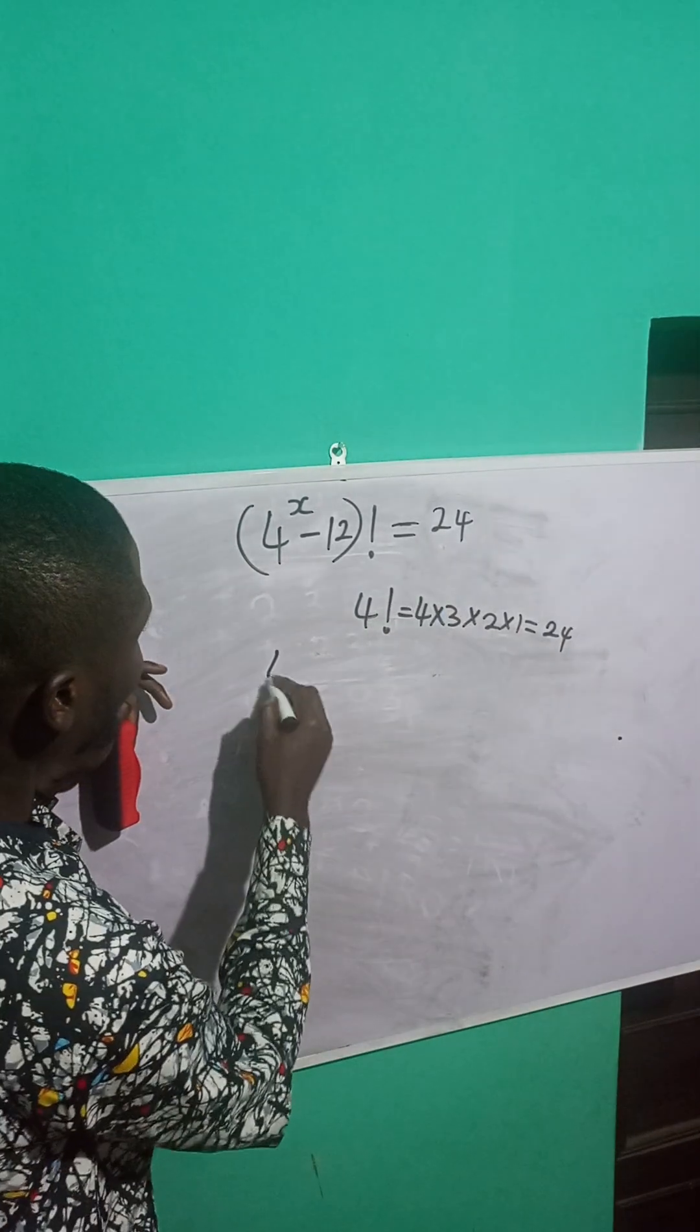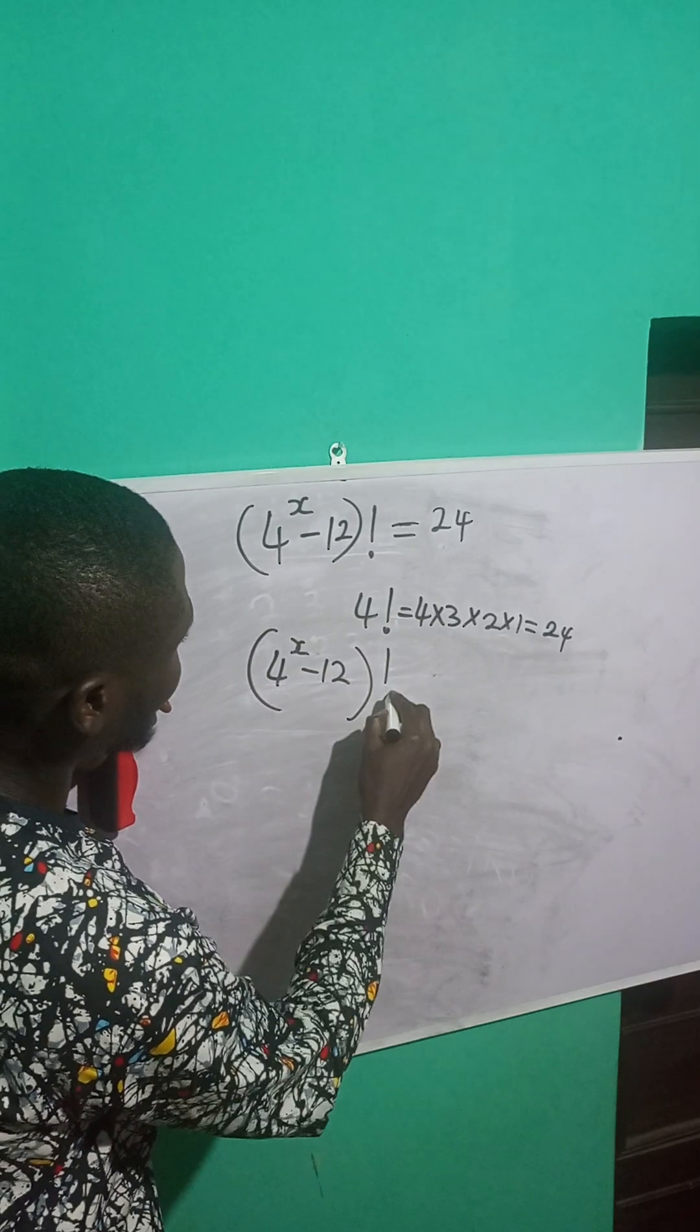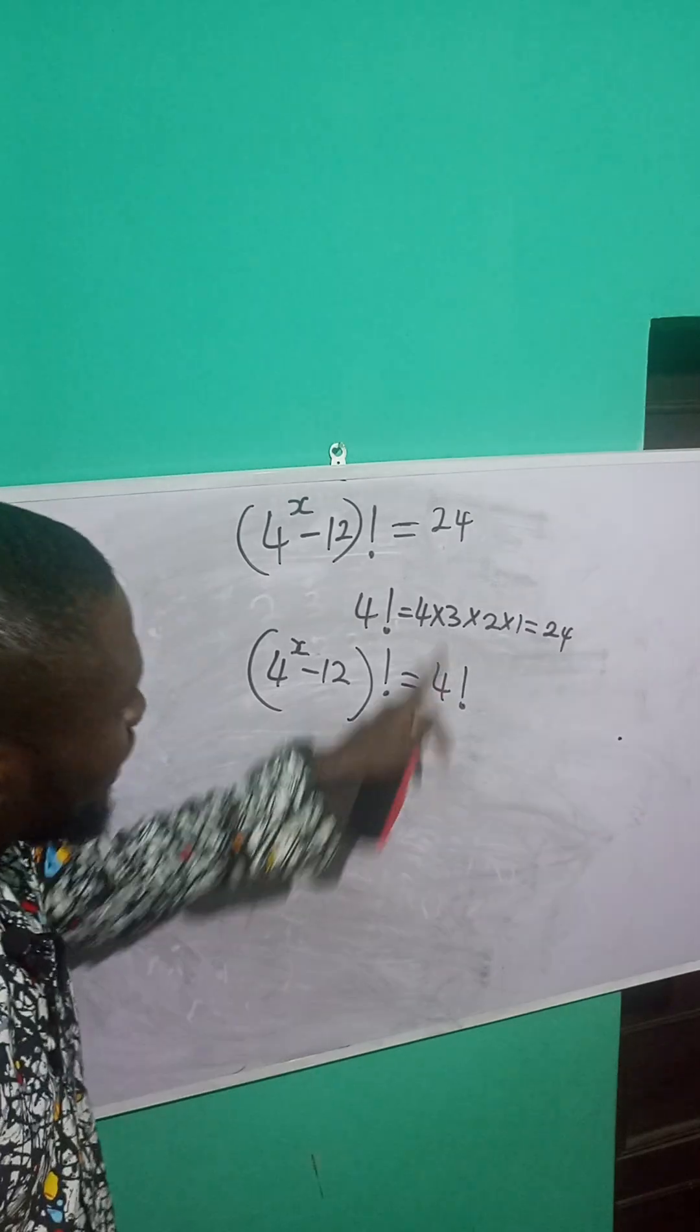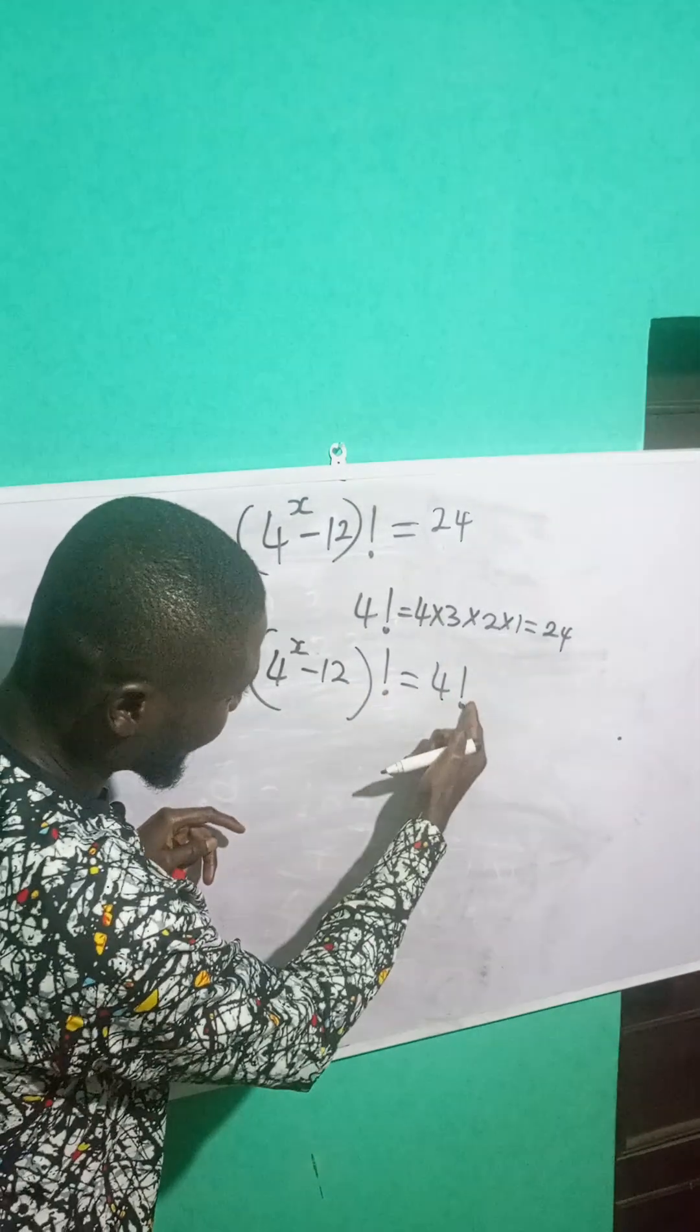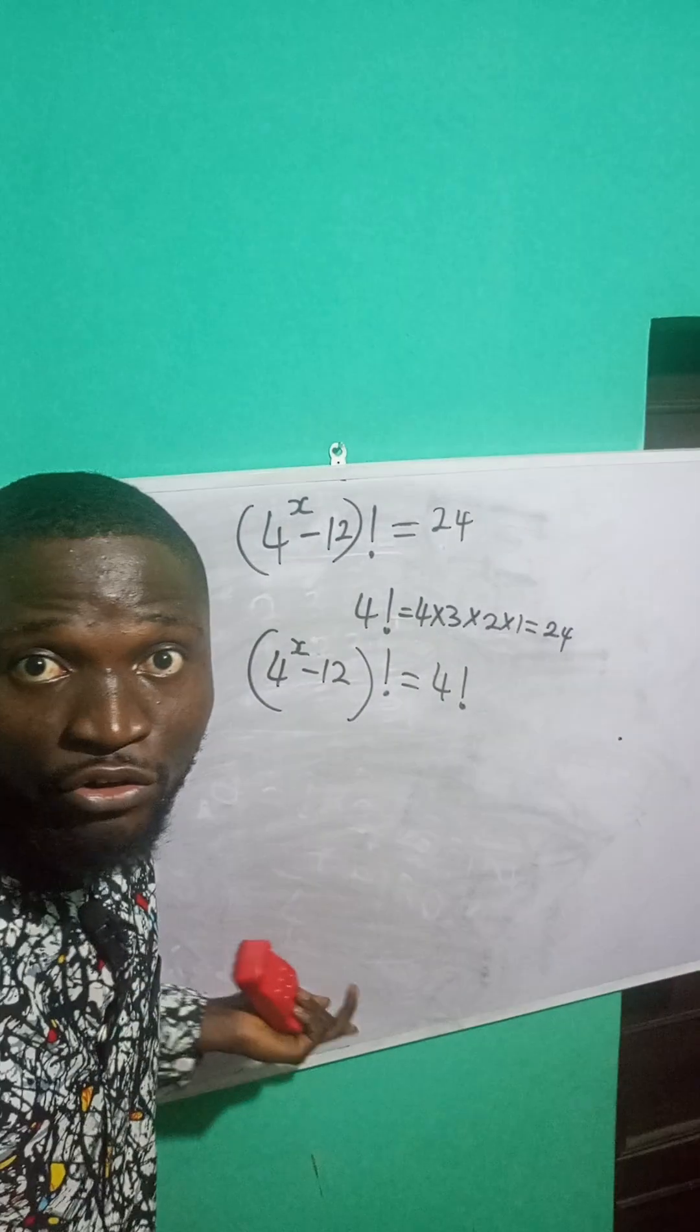So I can write this to be 4 raised to power x minus 12, all factorial, is equal to what? 4 factorial. 4 factorial is the same as 24. Now, notice there is a factorial here, and there is also a factorial here. So I can compare the two values and ignore the factorial.